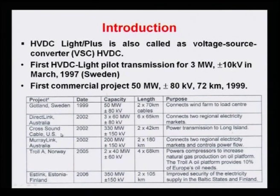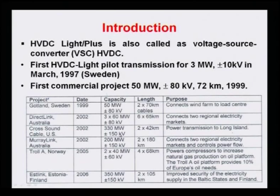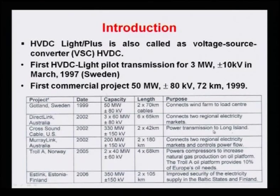Another project is the Cross Sound Cable in the US, also established in 2002, with a large capacity of 330 MW at ±150 kV. It uses two cables in a bipolar arrangement over 42 kilometers, primarily for power transmission to Long Island.